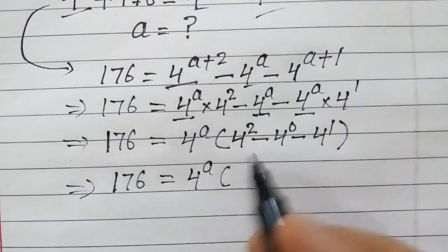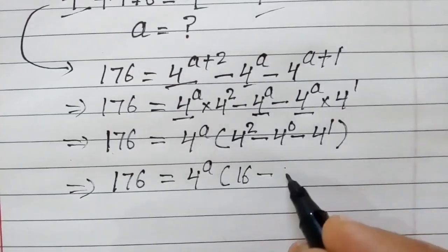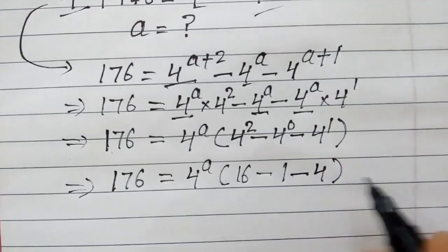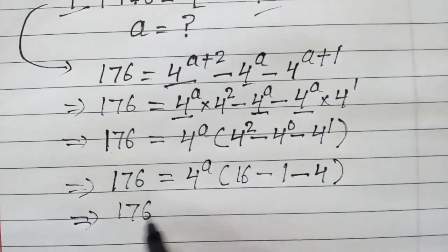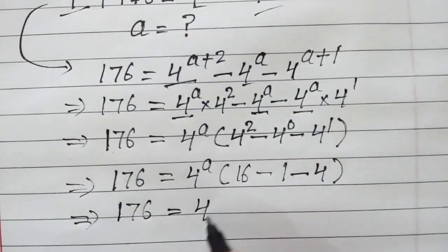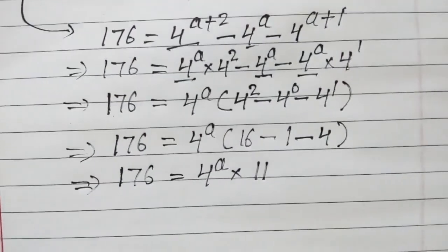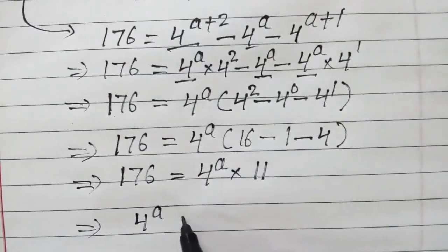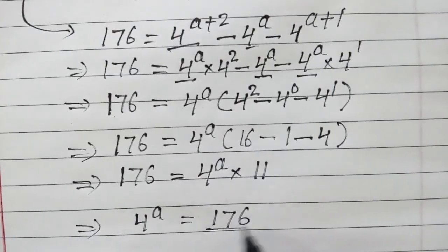4 squared is 16, minus 4 to the power 0 which is 1, minus 4. So 176 is equal to 4 to the power a into 11. Therefore, 4 to the power a is equal to 176 over 11.